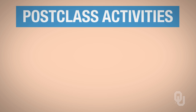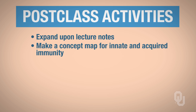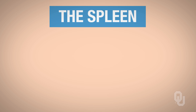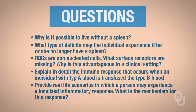I went ahead and gave you some suggestions for post-class activities to help you learn this material a little better. You can expand upon your lecture notes, make a concept map for innate and acquired immunity, and build off the concept map already given. You can also make a table to compare and contrast all the different types of blood cell types — be sure you review the blood lab. The spleen plays a significant role in the body's immune system, so I've left you some questions about the spleen to think about. If you have questions, let me know and I'll be sure to help you.